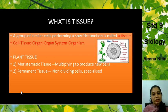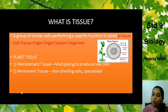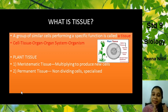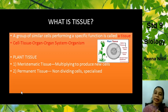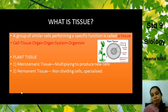Now, first of all, what is a tissue? You know our body is made up of numerous cells. Not only our body — the body of all plants as well as animals is made of numerous cells. Now some of these cells are similar in structure and function, so they come together and they are known as a tissue. So what is a tissue? A group of similar cells which can perform a specific function.